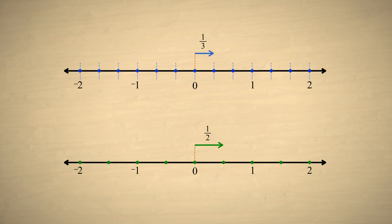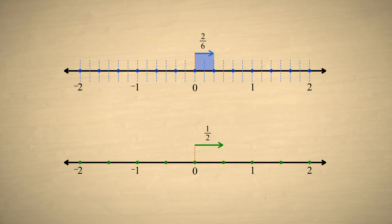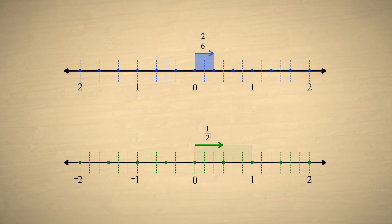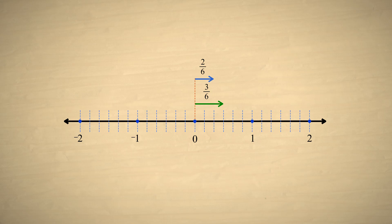For instance, in this example we can split each division on the top number line in half. Each unit length on the top line will then be divided into six equal pieces, and the fraction one-third will be represented by two of these divisions, or two-sixths. Now if we split each unit on the bottom number line into thirds, each unit will also be divided into six equal pieces, and the fraction one-half will be represented by three of these divisions, or three-sixths. Both fractions now represent some number of the same-sized divisions, so we can add their numerators, and we see that these two fractions add up to five-sixths.